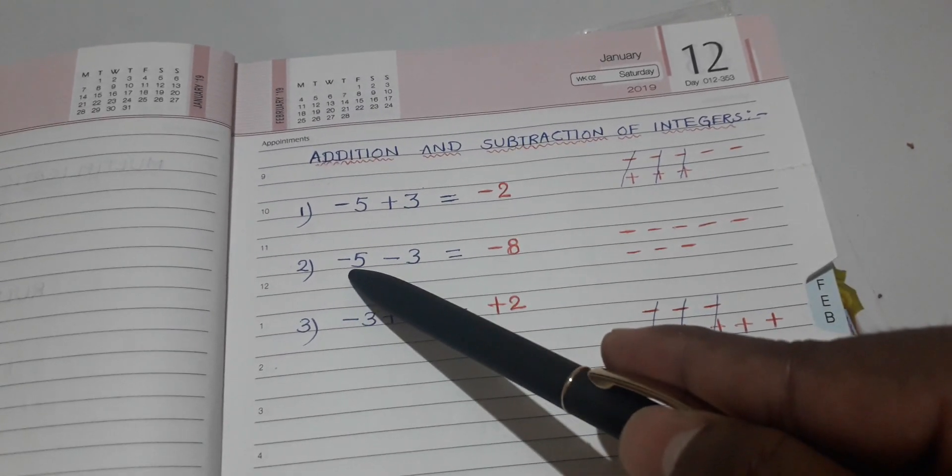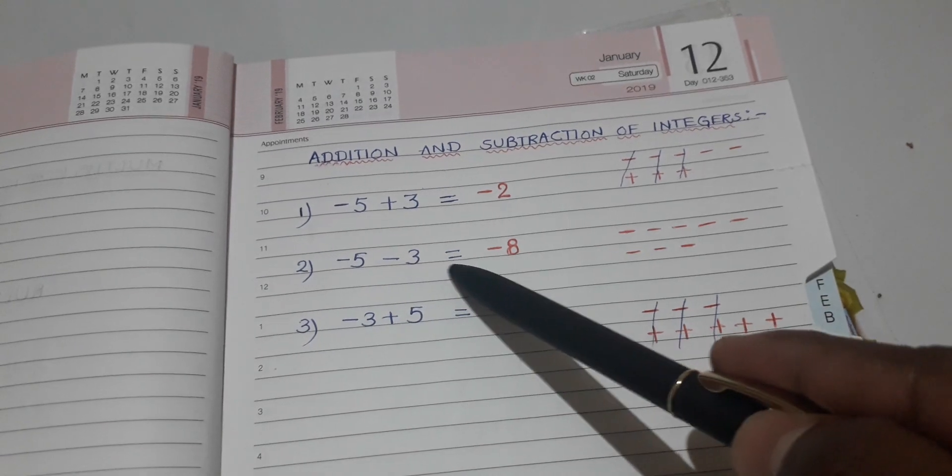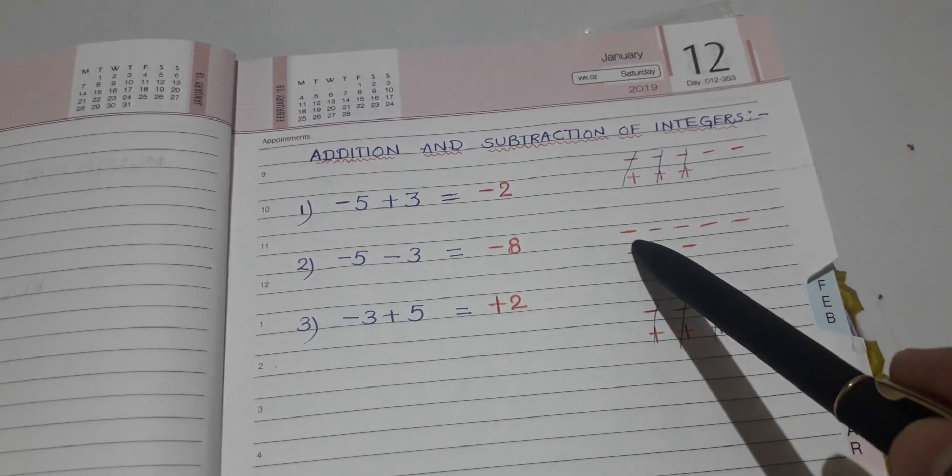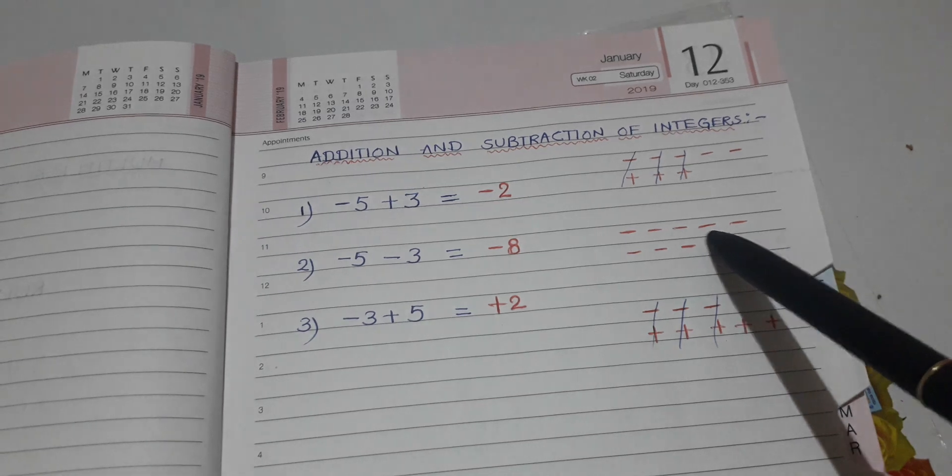In the same way, minus 5 minus 3 is what? Minus 5, 5 minus symbols you write: 1, 2, 3, 4, 5.